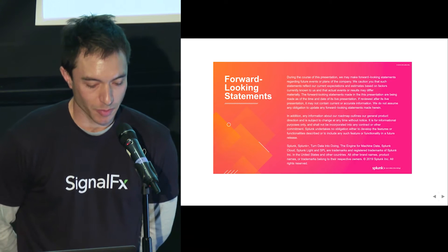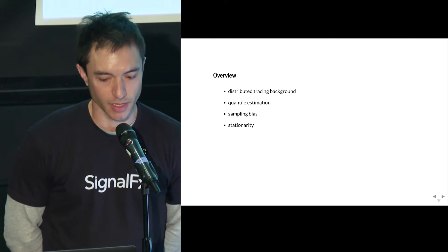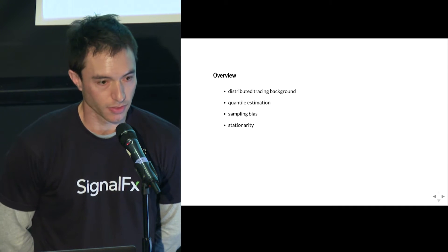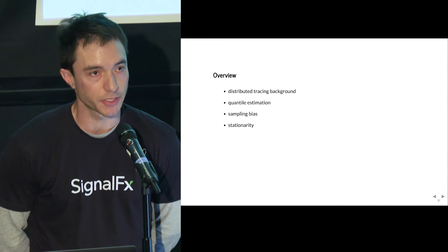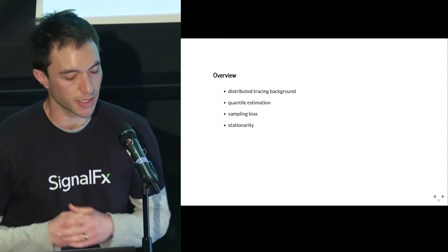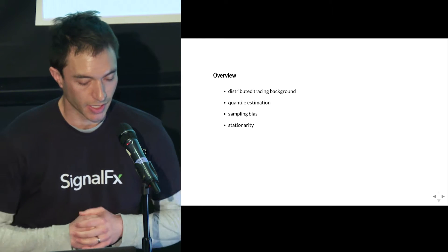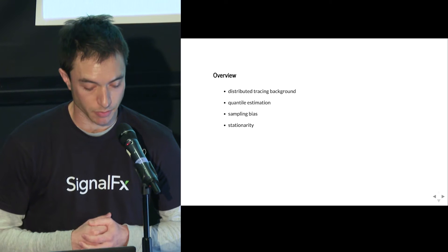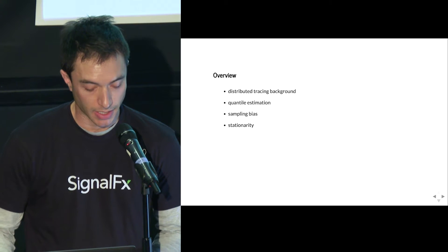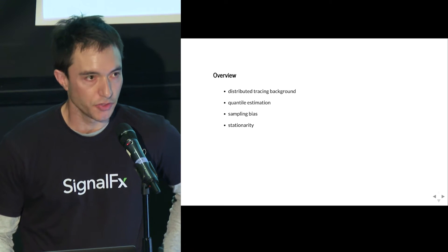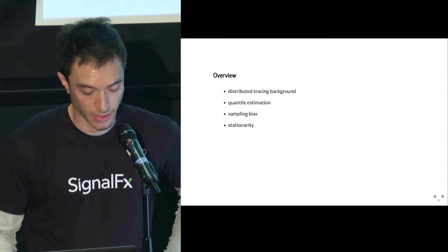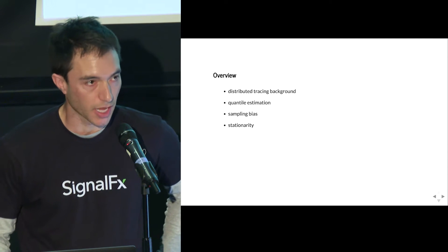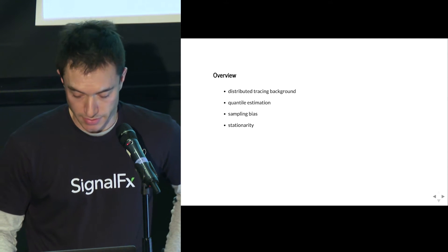After mentioning some of the background, I'd like to focus on three statistical themes. The first is various data structures for doing quantile estimation — in particular, a new version of a T-digest which we've developed. Then I'll discuss the problem of undoing sampling bias. And then I'll say a few words about how to handle non-stationarity in this context.